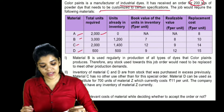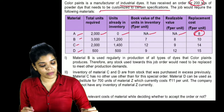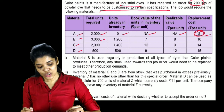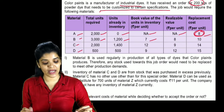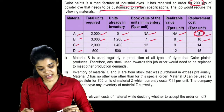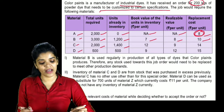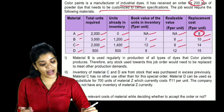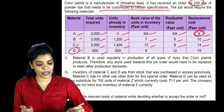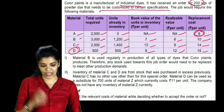Material A requires 2,000 units, no inventory, no book value, no realizable value, replacement cost Rs.8 per unit. Material B: 3,000 units required, 1,200 already in inventory, book value Rs.7, realizable value Rs.8, replacement cost Rs.10 per unit. Material C: 2,000 units required, 1,400 in inventory, book value Rs.10, realizable value Rs.9, replacement cost Rs.14. Material D: 500 units required, 500 in inventory, book value Rs.9, realizable value Rs.12, replacement cost Rs.15.